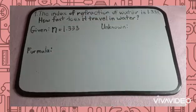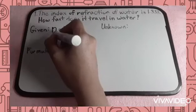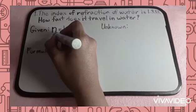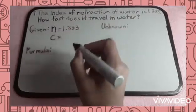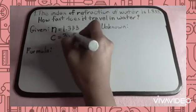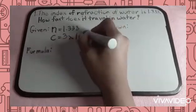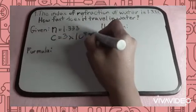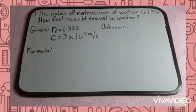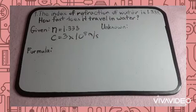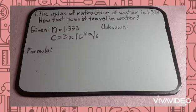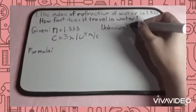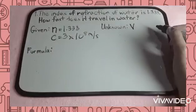Also, one given is the speed of light in vacuum, which symbolizes small letter C, which has a value of 3 times 10 raised to 8 meters per second. And for our unknown — how fast does it travel in water? This is the speed of light in water, which symbolizes small letter V.